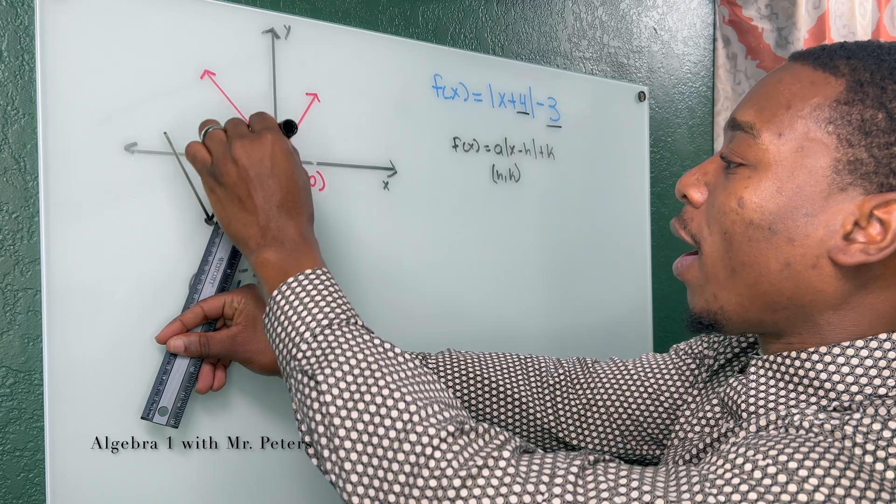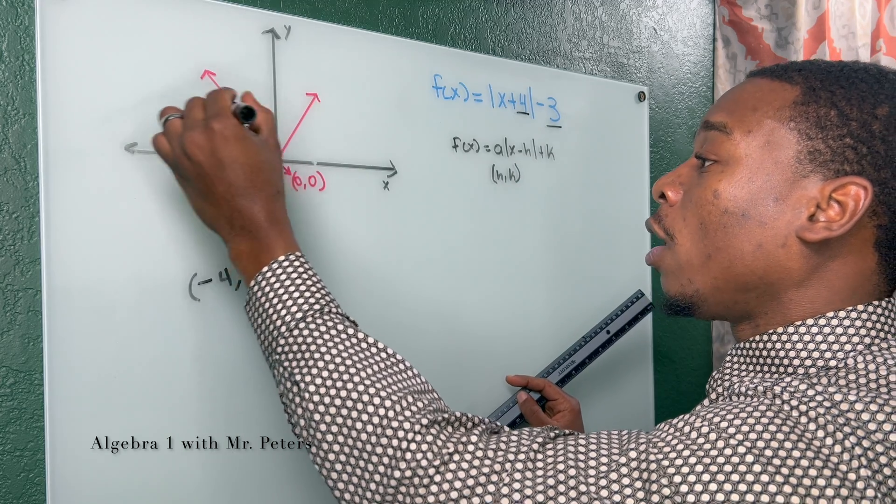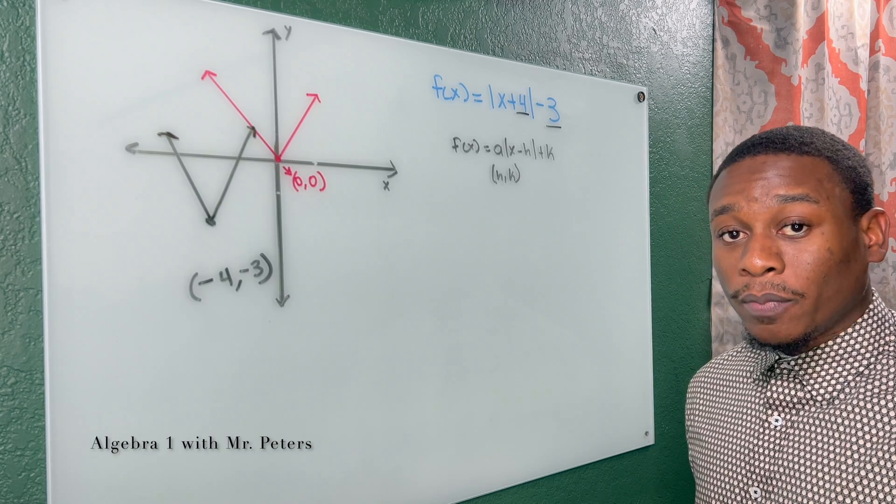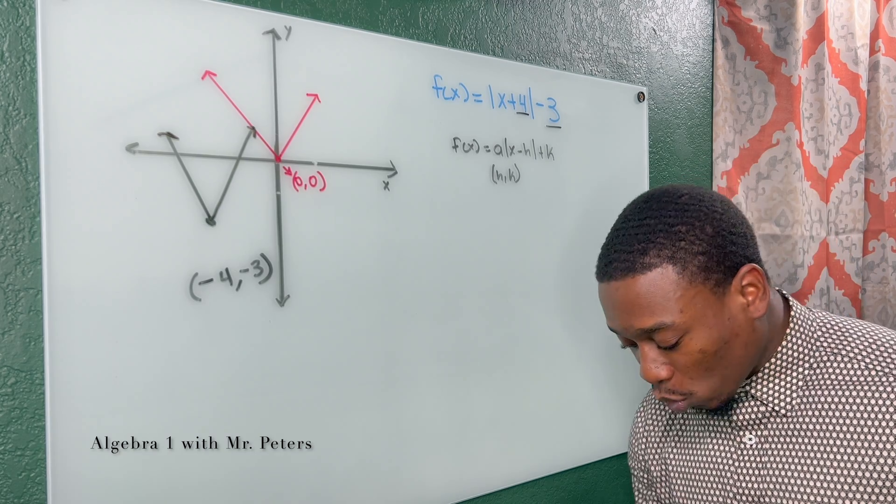Now, this is graphing by transformations, and this is different than actually finding the solutions to the absolute value function. And this is what I mean.